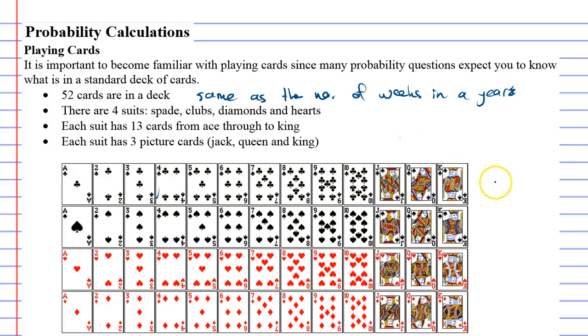Now in a deck there are four suits, and the four suits are clubs which is this row, spades, hearts, and diamonds.